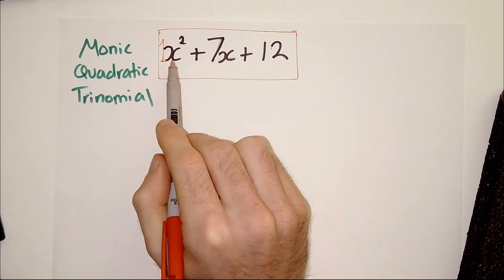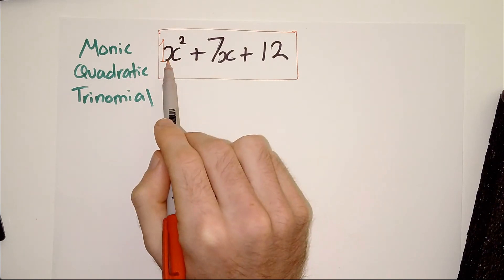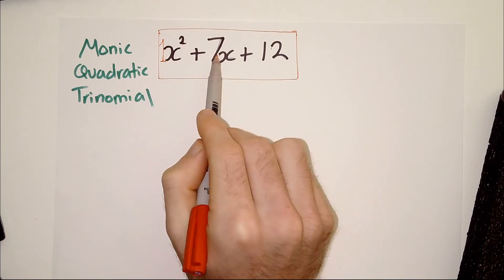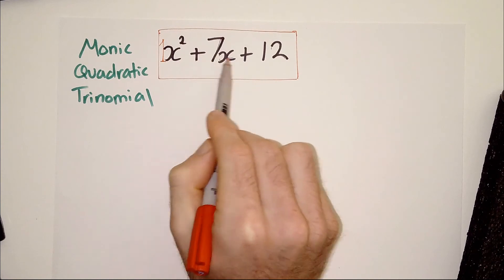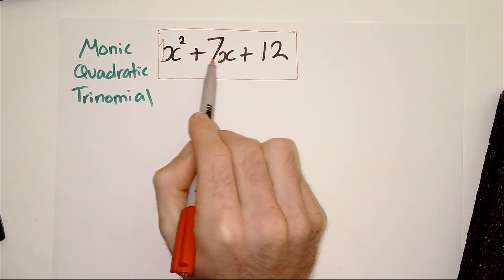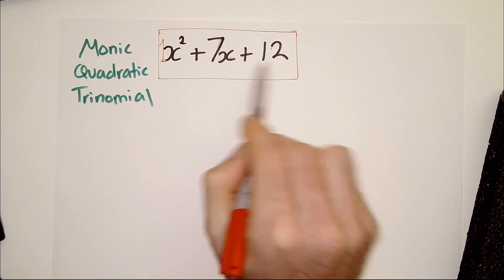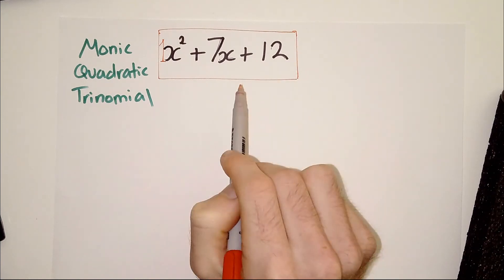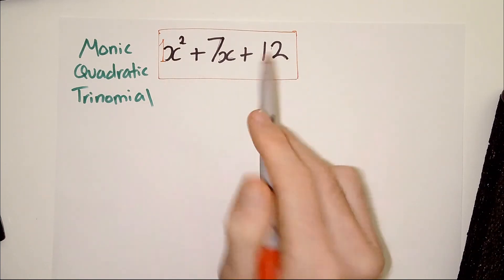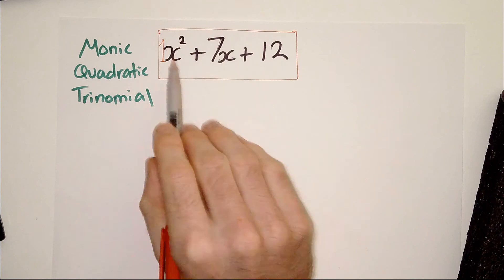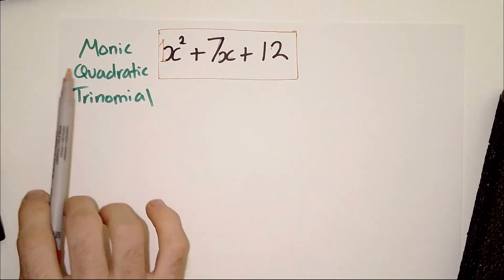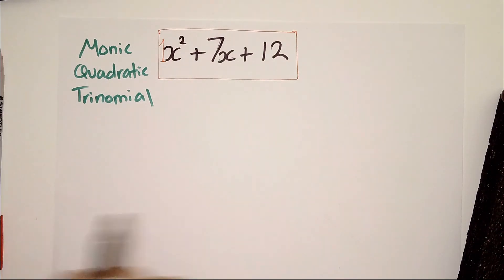So, you will typically with a trinomial have, well, you'll always have an x squared term, an x term that has a number before it. Remember, if it just said x, it would mean 1x. And a constant, a number at the end that doesn't have an x or an x squared. Okay. And you always order them in that way. If a question ever gives you a trinomial in a different order, put it into this order. Okay. So, that's what a monic quadratic trinomial is.